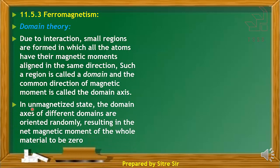In an unmagnetized state, the domain axes of different domains are oriented randomly, resulting in the net magnetic moment of the whole material being zero. The domain direction and domain axis of the magnetic field are considered in this context.